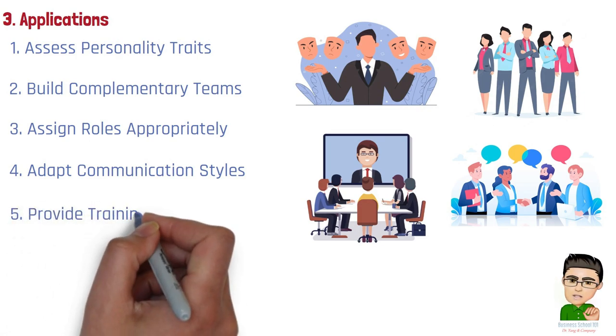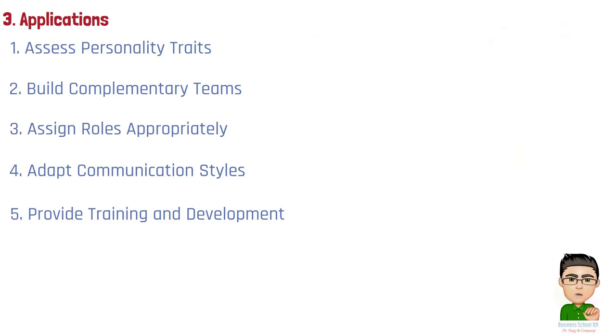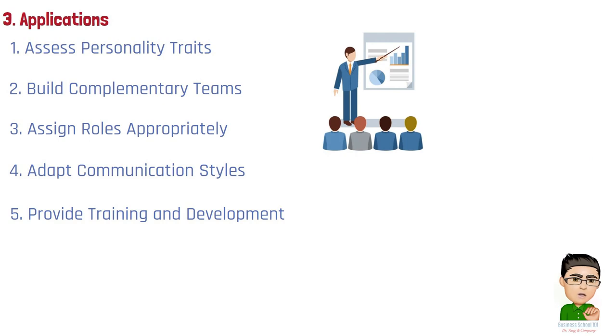Number 5. Provide training and development. Consider the five-factor model when designing training programs. Tailor training to individual needs and preferences based on personality traits. For instance, individuals with lower openness may benefit from practical and concrete examples during training.